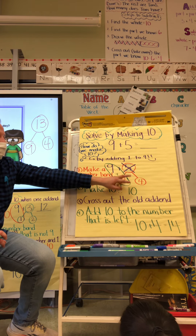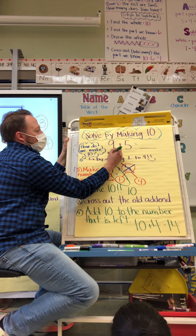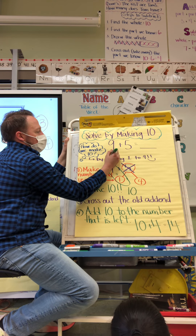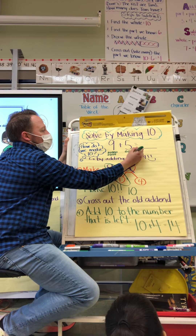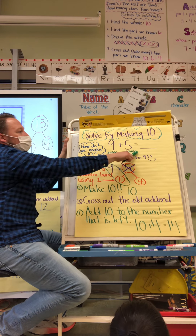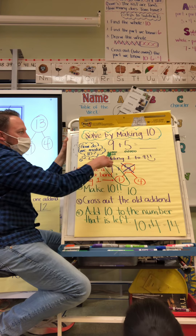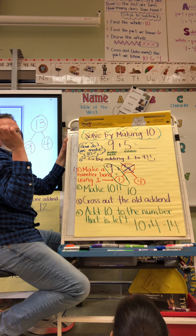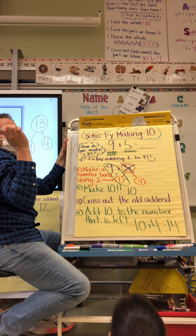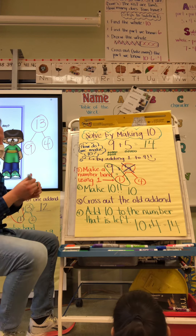So by making a ten, we got fourteen. We made the nine into a ten by breaking apart the five. But if I had just counted one, two, three, four, five, six, seven, eight, nine and then one, two, three, four, five, and counted them all together — nine and five would have also given us fourteen.